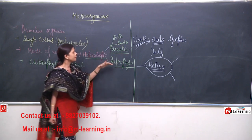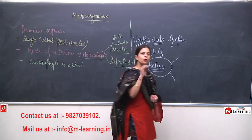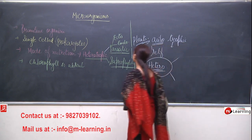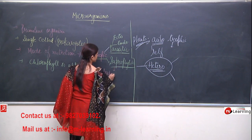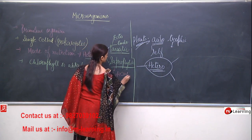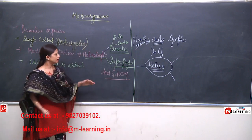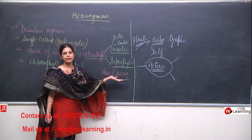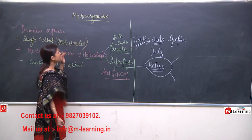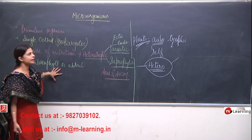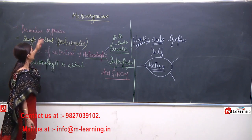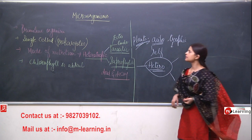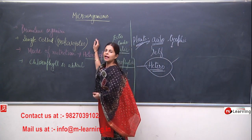Now we come to saprophytes. Saprophytes are those which get their food from dead and decaying organisms or dead and decaying substances. Bacteria are one of the most primitive organisms — they are single-celled and prokaryotes.